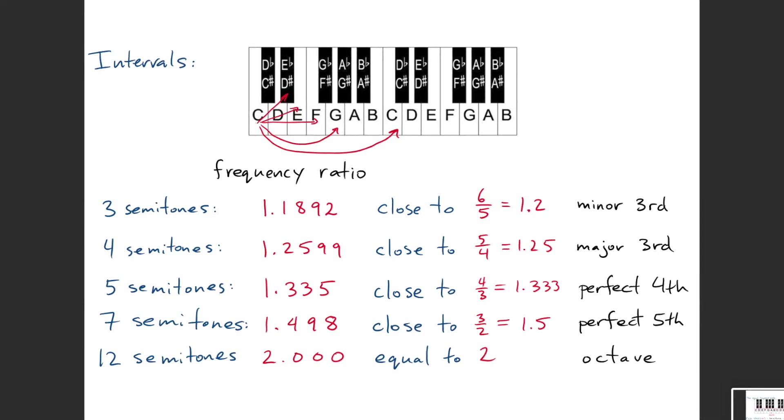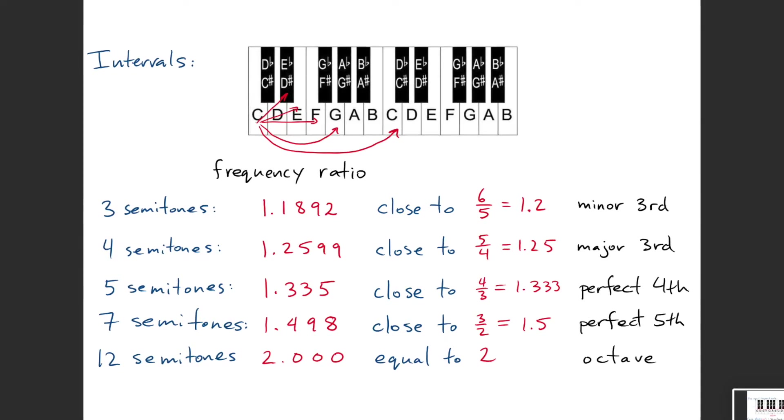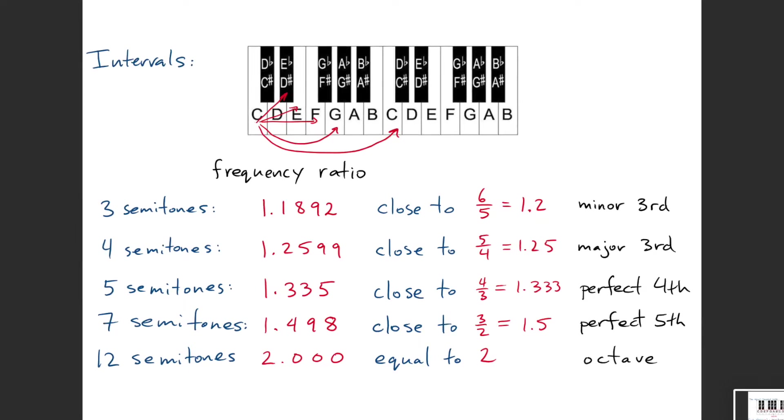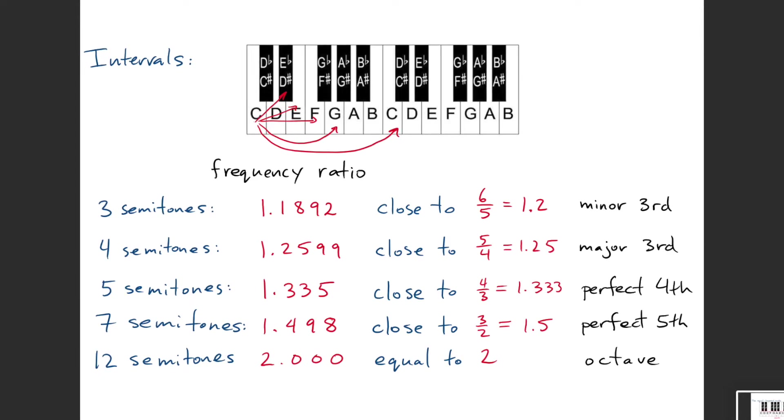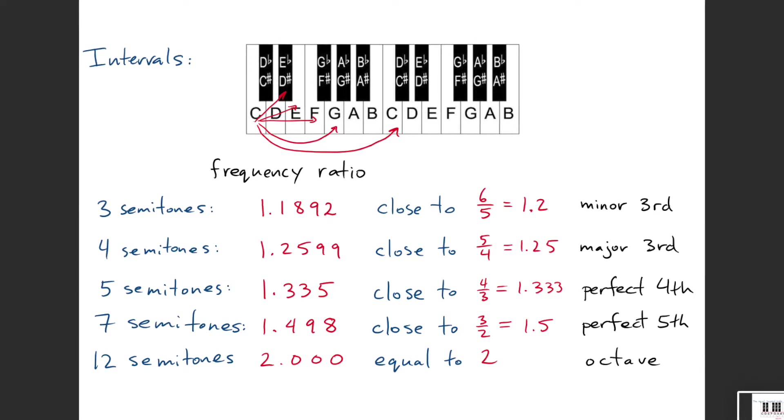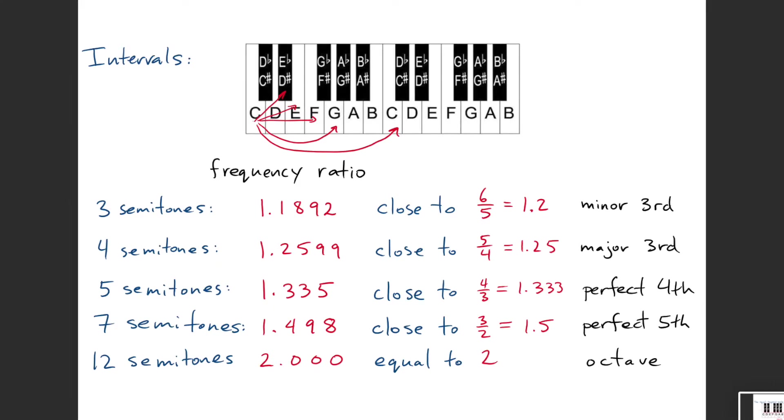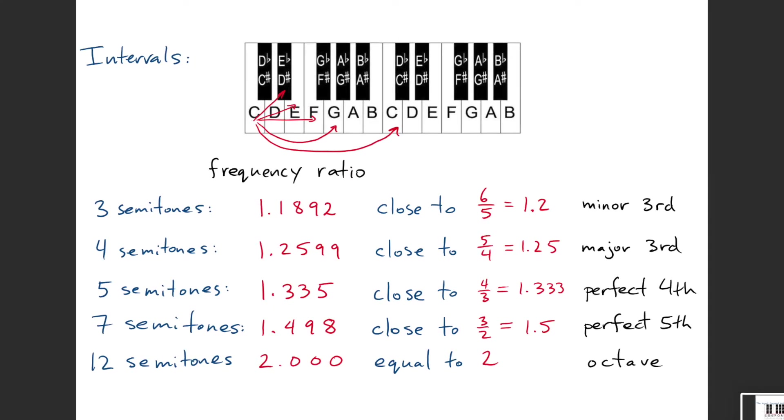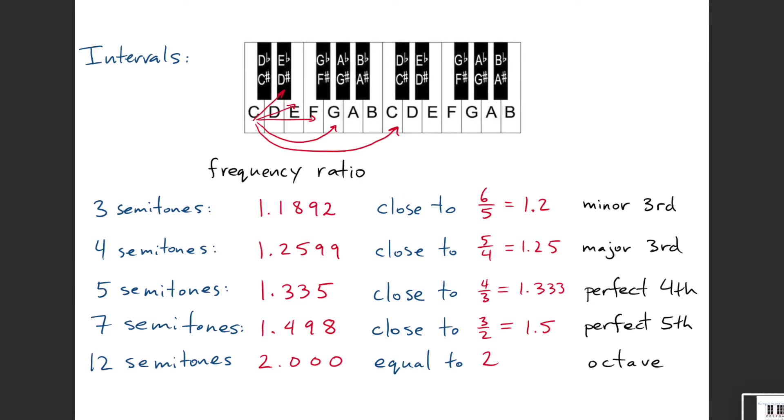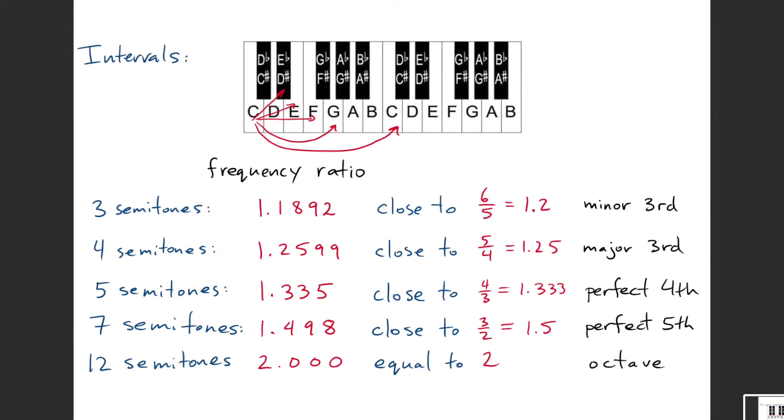Going from C to G has the same multiple in terms of frequency as going from C sharp to G sharp. Playing triad C E G has the same feeling as playing C sharp F G sharp. Those notes have the same relationship to one another in the two cases.